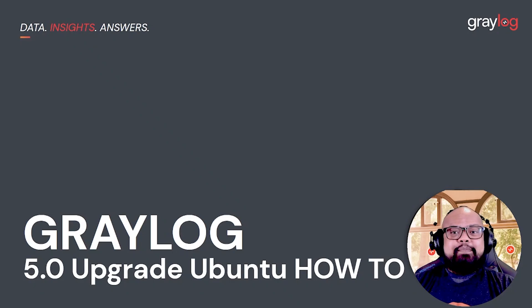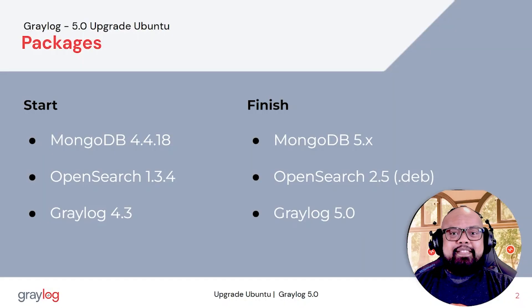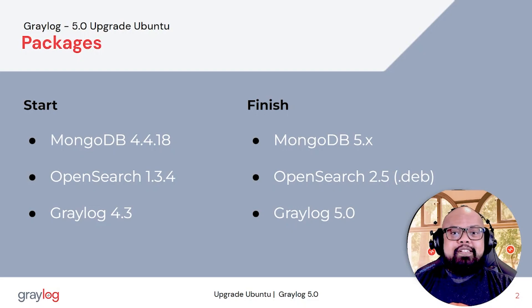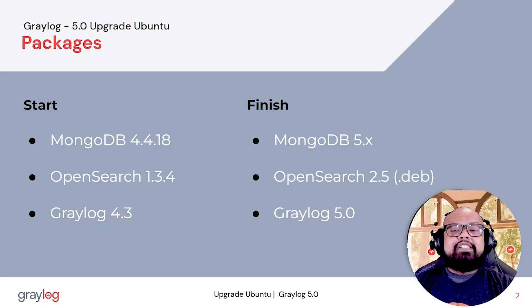If you happen to catch my previous install video of Graylog 4.3 plus OpenSearch 1.3.4, then you're in the right spot and welcome back. The environment we're upgrading today starts off with Mongo version 4.4.18, OpenSearch version 1.3.4, and Graylog 4.3. When we're done, it's going to be Mongo version 5, OpenSearch version 2.5, and Graylog 5. This is going to be a single node upgrade, so we have a lot of work to do. Let's get started.